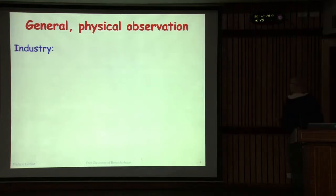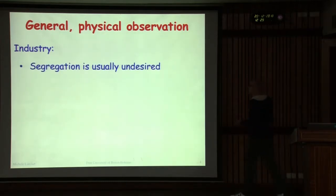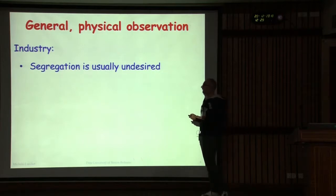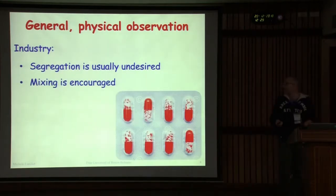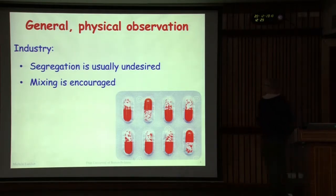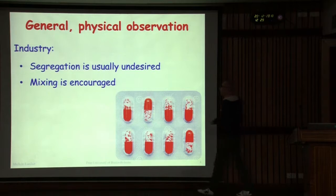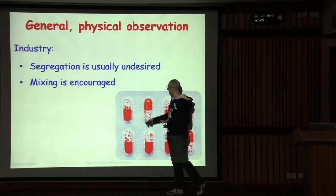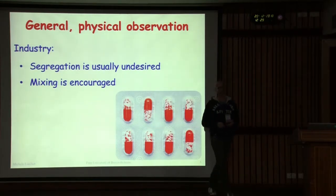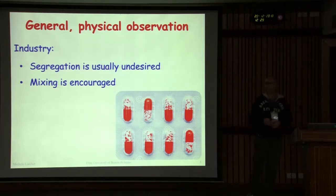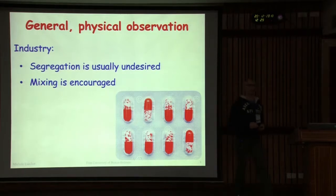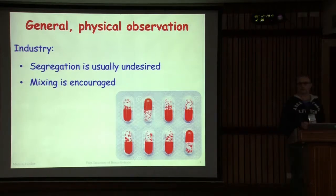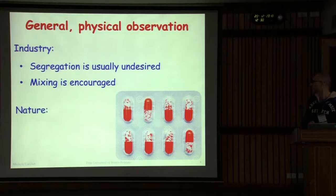What we can say about industry is that in most cases segregation is something we do not desire — we do everything possible to avoid it, and mixing is the goal that is typically wanted. For example, drug pills consisting of several particles of different characteristics: the producer intends to have a well-mixed and controlled situation when these kinds of things are produced.